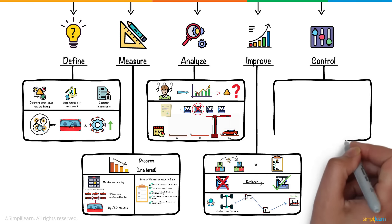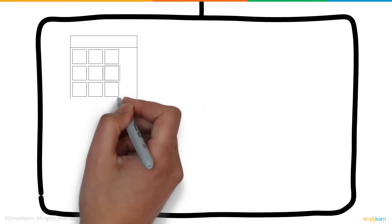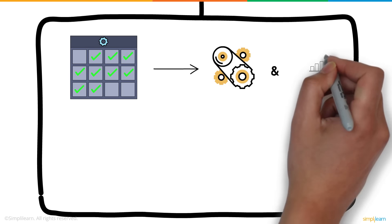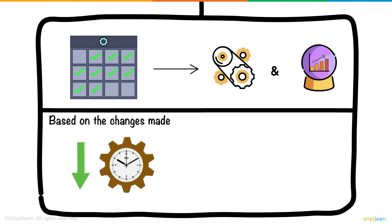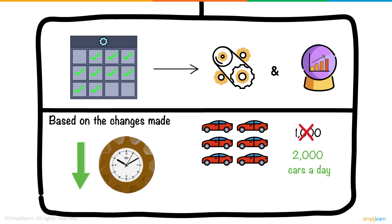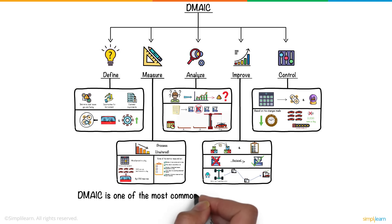And finally, in the Control phase, you make regular adjustments to control new processes and future performance. Based on the changes made, the company was able to reduce production time and manufacture about 2,000 cars a day with a higher quality of output. DMAIC is one of the most commonly used methodologies in the world.